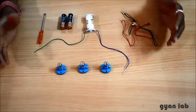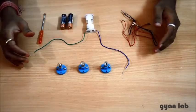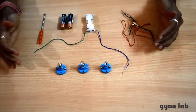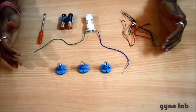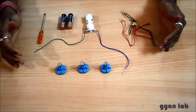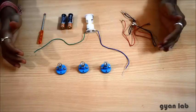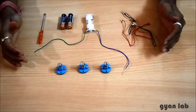To build this particular circuit what we are going to need is again three bulbs, a battery holder with two batteries, and the number of wires here have gone up. So earlier in the series circuit we were using two connecting wires, but in this one we are going to need four.